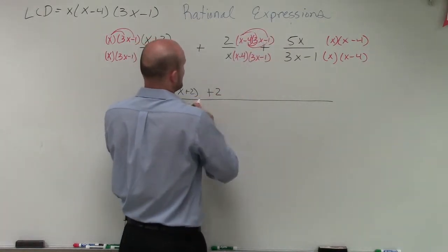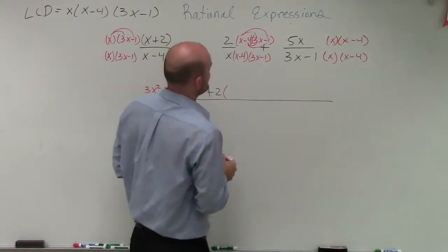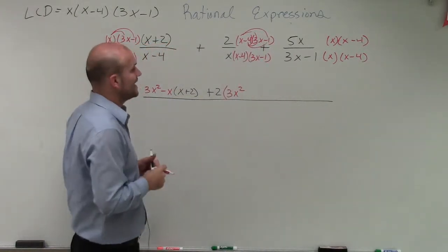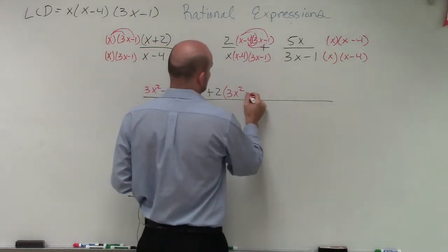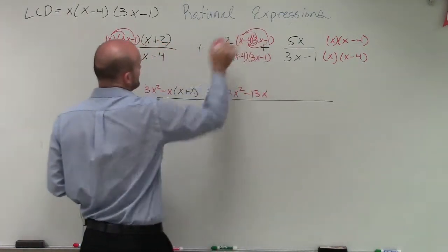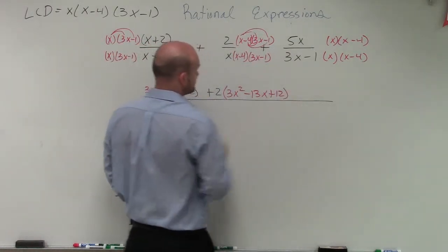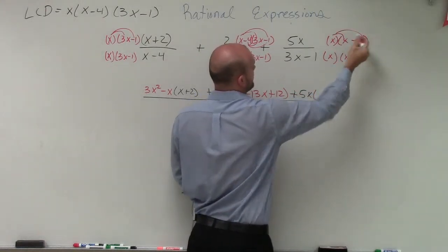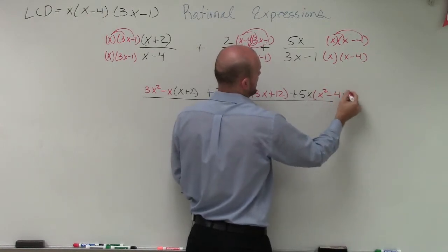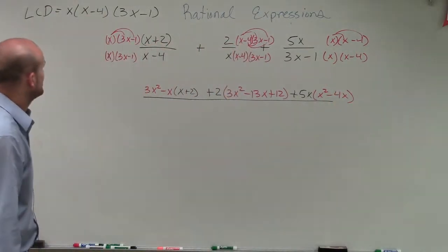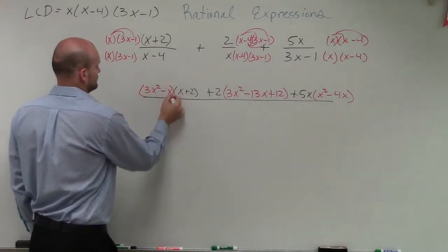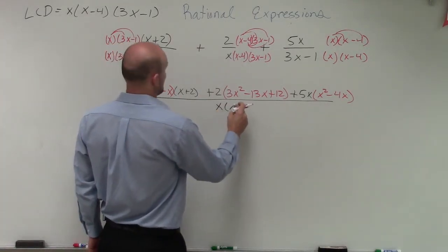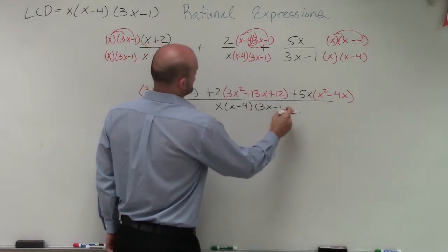For the middle fraction, applying FOIL: 2 times x times 3x gives 3x², x times negative x is negative x, negative 4 times 3x is negative 12x — giving negative 13x combined — and negative 4 times negative 1 is positive 12. Then for the last term, I have 5x times (x²−4x) using the distributive property. All of this is over our LCD, which is x times (x minus 4) times (3x minus 1).